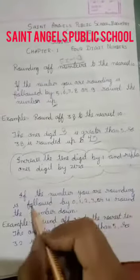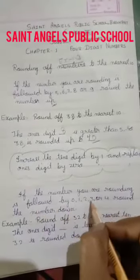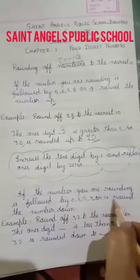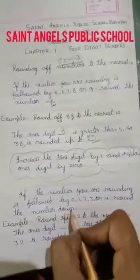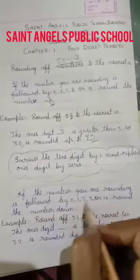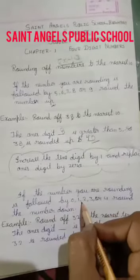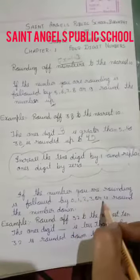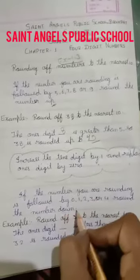Next, if the number you are rounding is followed by 0, 1, 2, 3 or 4, round the number down. Jab aapka 1's digit 0, 1, 2, 3 or 4 hai, aapka number down hoga.